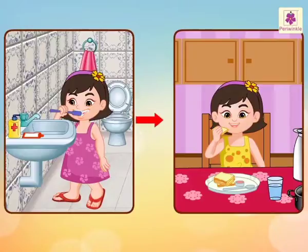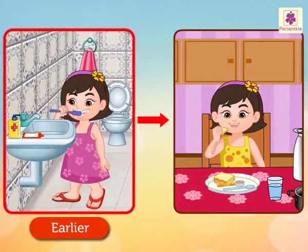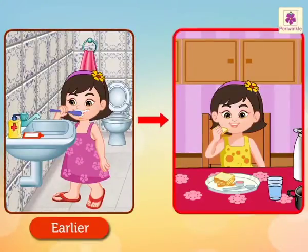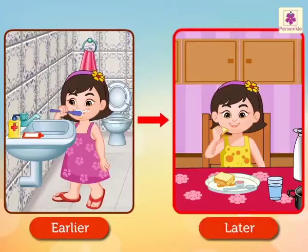So, the activity of brushing her teeth is said to happen earlier. Whereas, the activity of having breakfast is said to happen later.